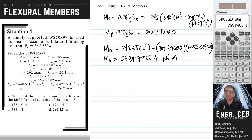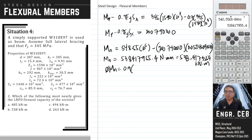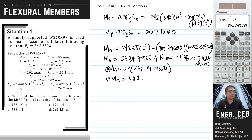For the LRFD capacity, we multiply the nominal moment strength by the resistance factor 0.9. In kilonewton meters, the nominal strength is 538.42 kN·m. Multiplying by 0.9 gives a moment capacity of 484.58 kN·m. Therefore, the answer is letter C.